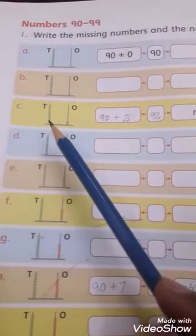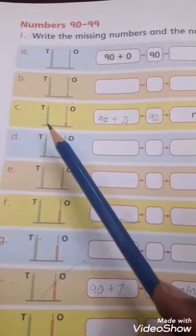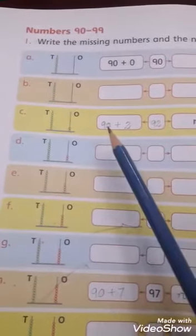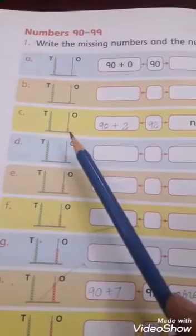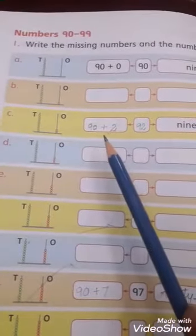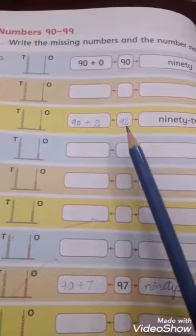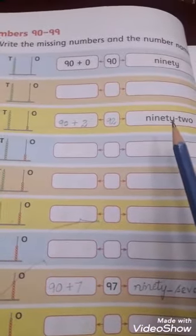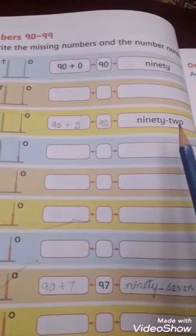Now come to Part C. In the first rod there are nine beads in tens rod means 90, and two beads in ones rod means 2. 90 plus 2 equals 92, ninety-two.